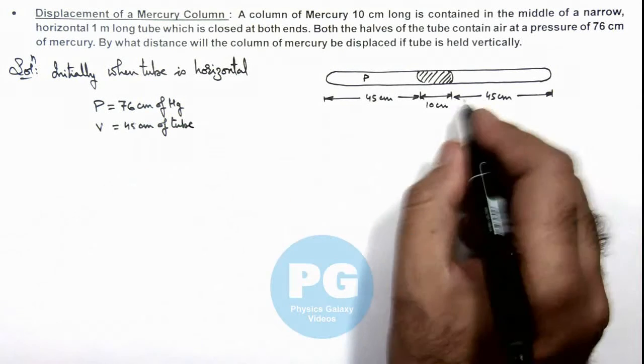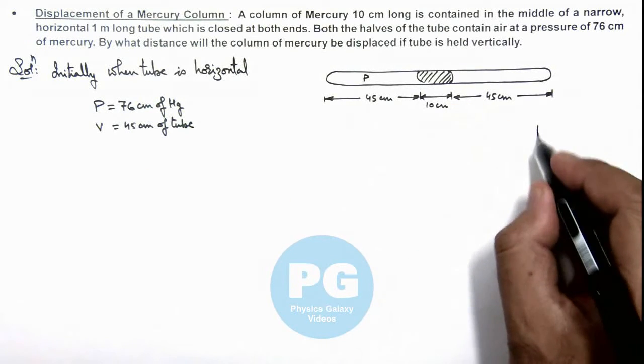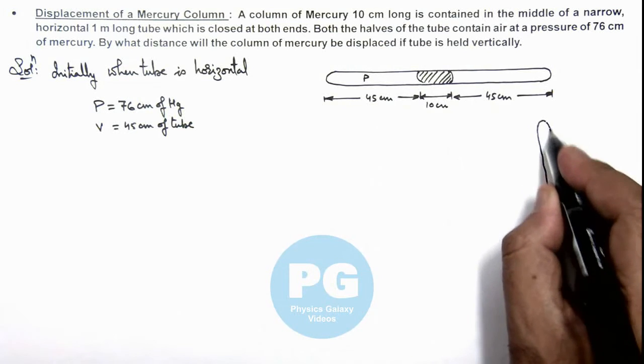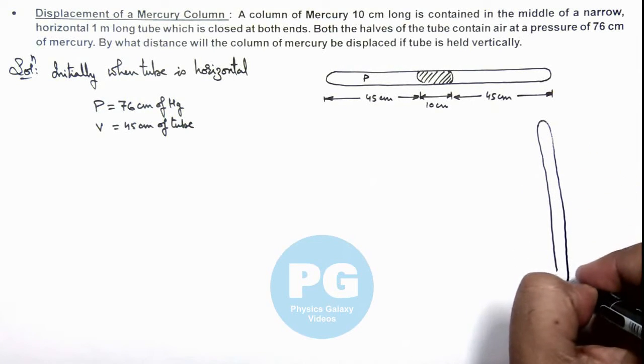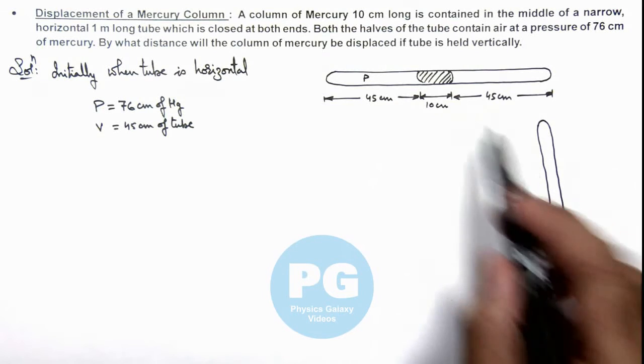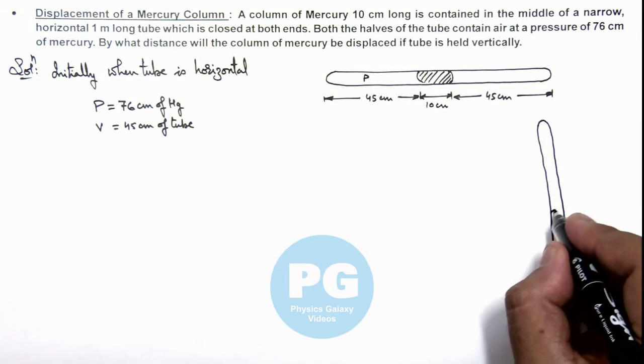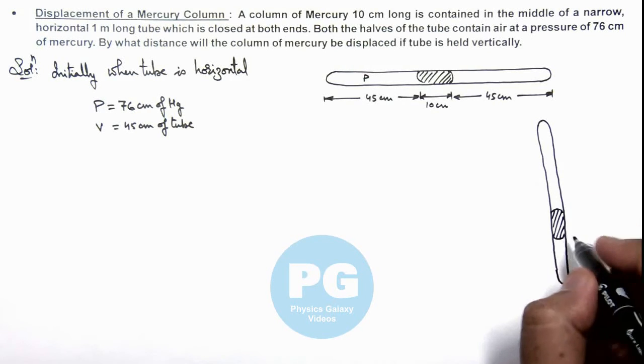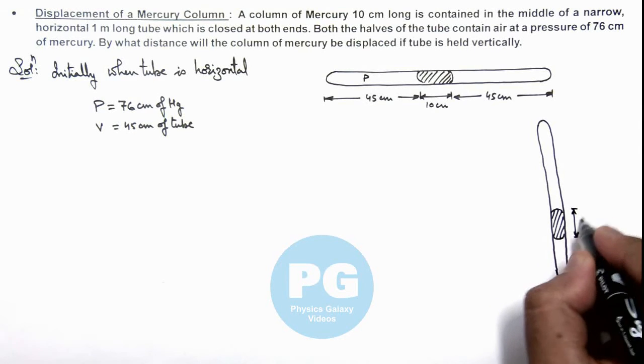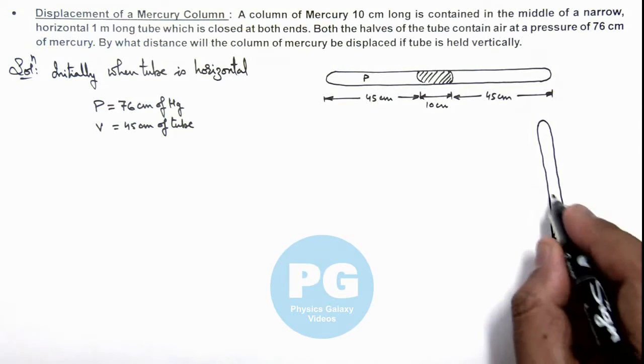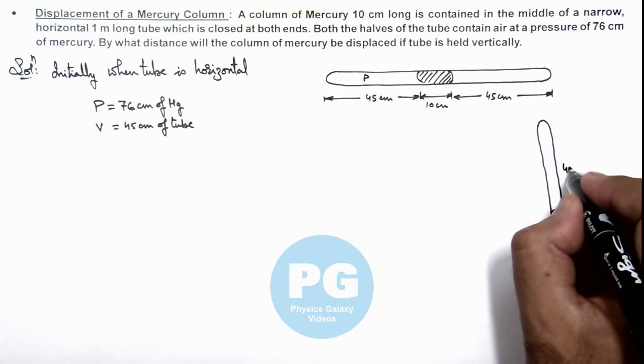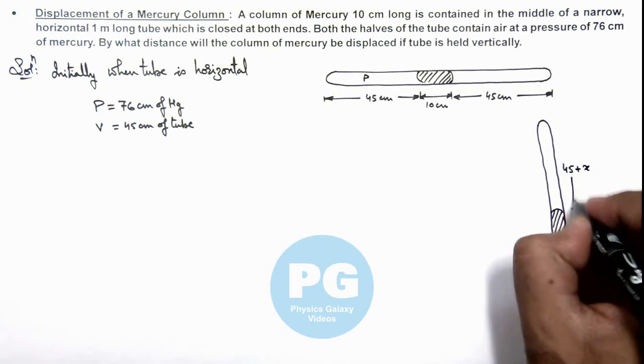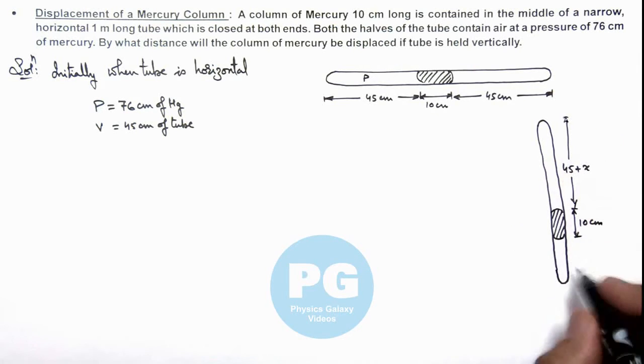Now when the tube is tilted in a vertical manner like this, then obviously due to weight mercury column will displace slightly in downward direction. Say it is displaced down by x, its length is still 10 centimeter, but if it is displaced by x, the upper length will be 45 plus x and lower part will be having a length 45 minus x centimeter.